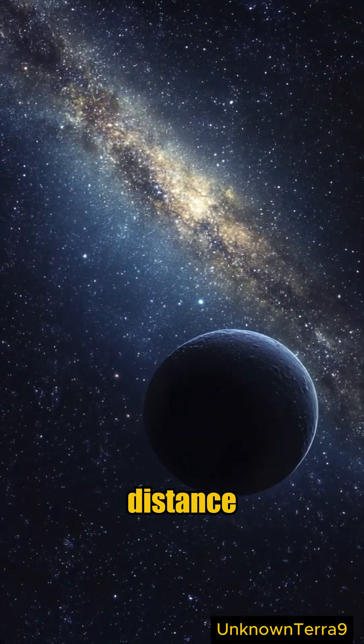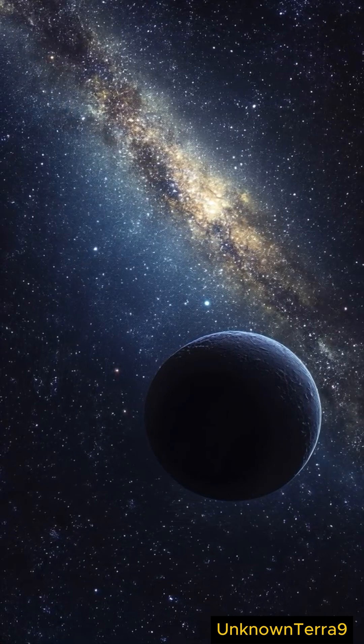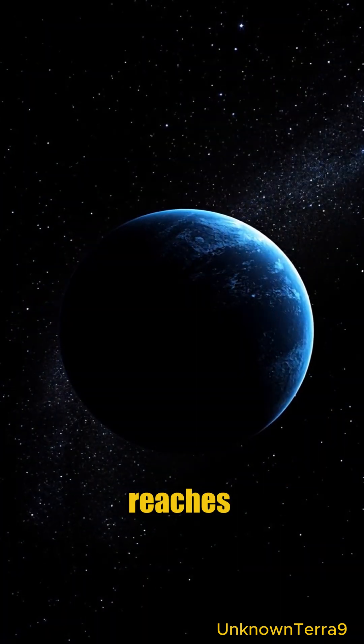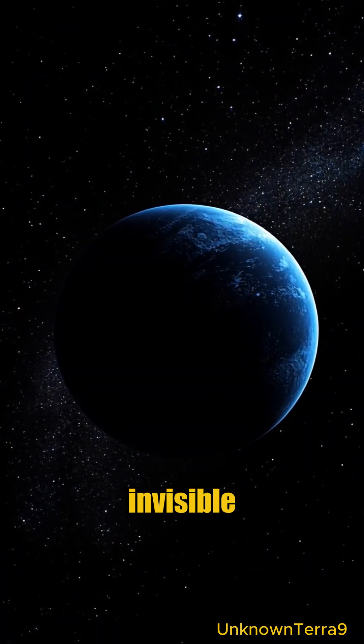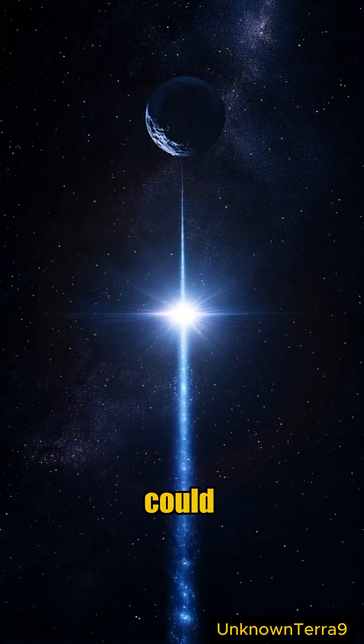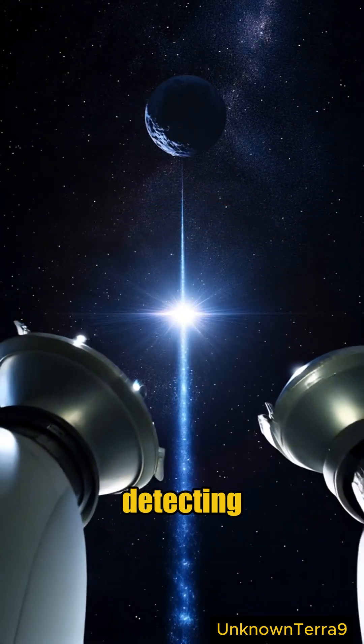Planet Nine's distance from the sun makes it hard to detect. No sunlight reaches Planet Nine, making it invisible in regular observations. The moons could be the key to indirectly detecting Planet Nine.